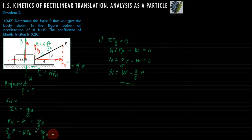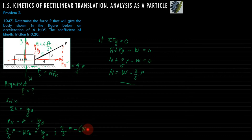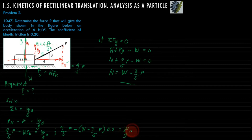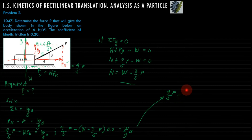Substituting into the x-direction equation: 4 over 5 P minus the quantity (W minus 3 over 5 P) multiplied by the coefficient of friction 0.2. So we have 4 over 5 P minus (322 minus 3 over 5 P) multiplied by 0.2.